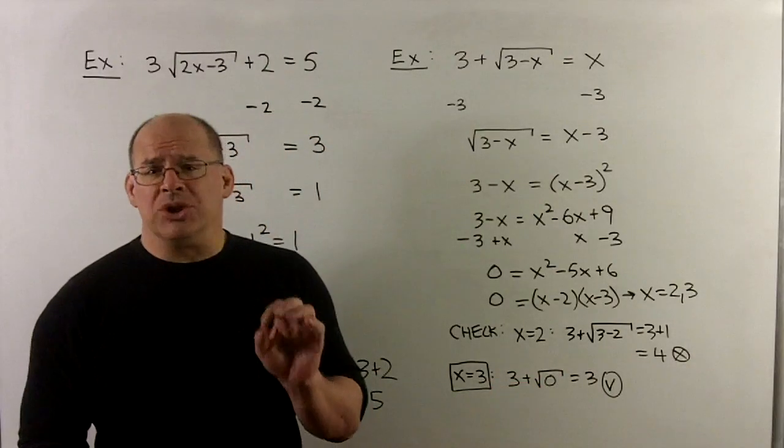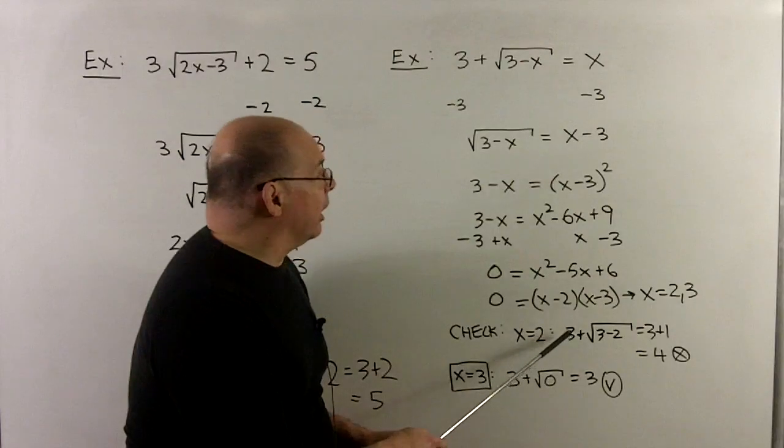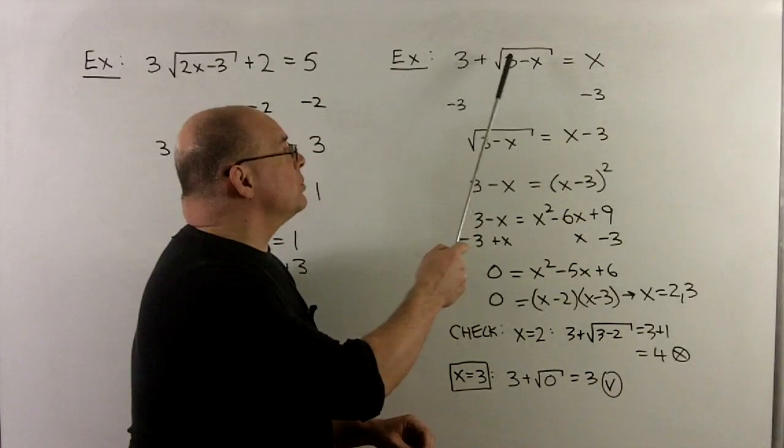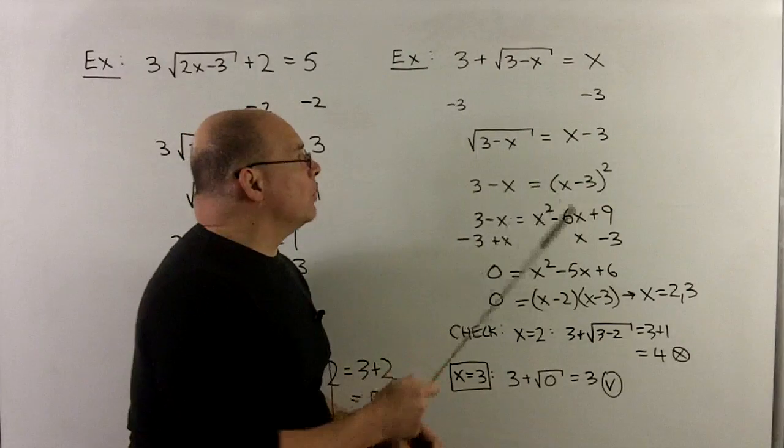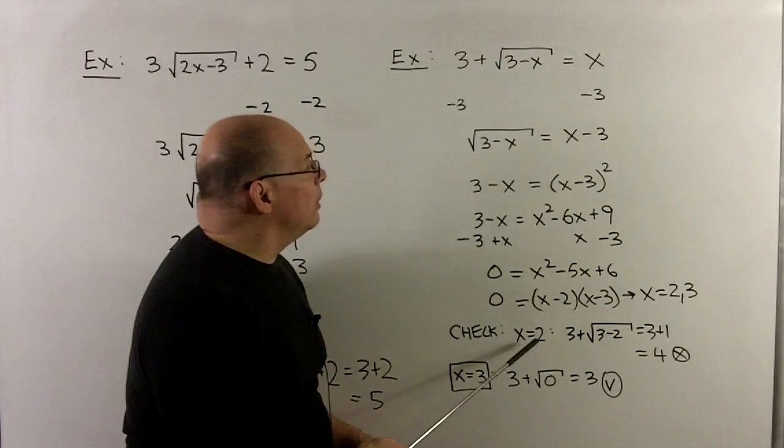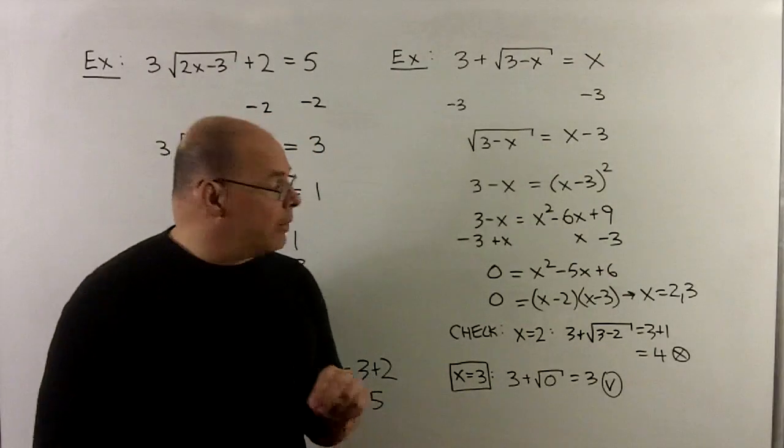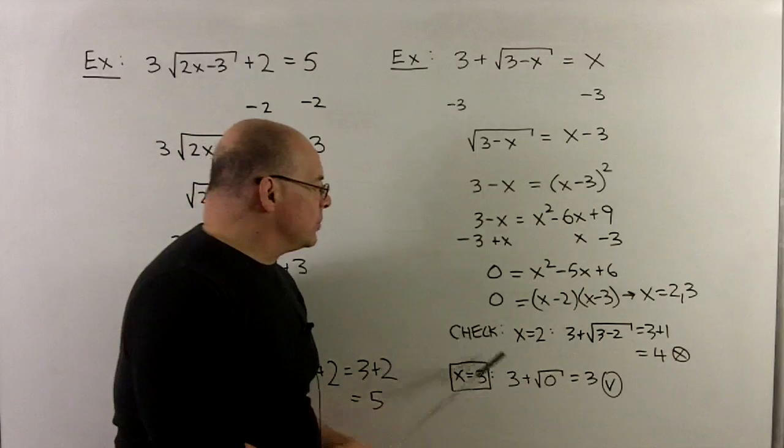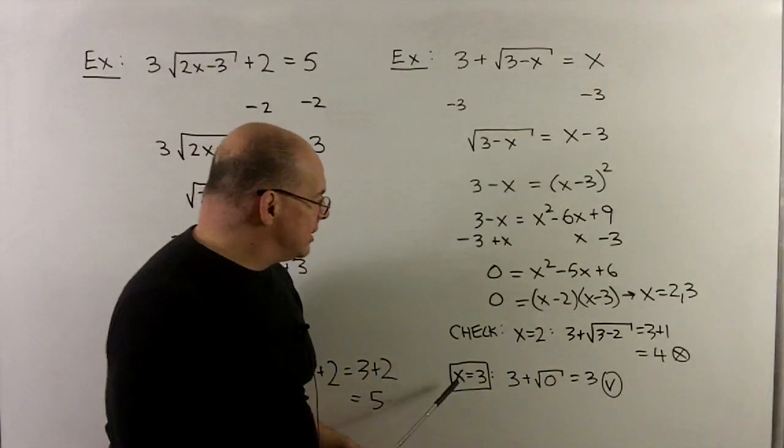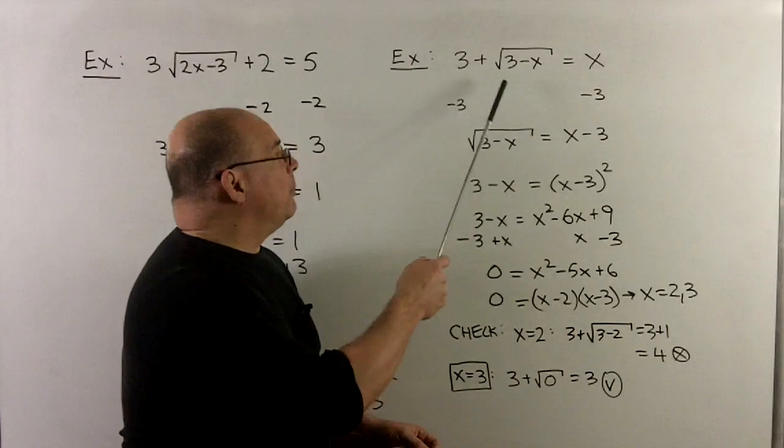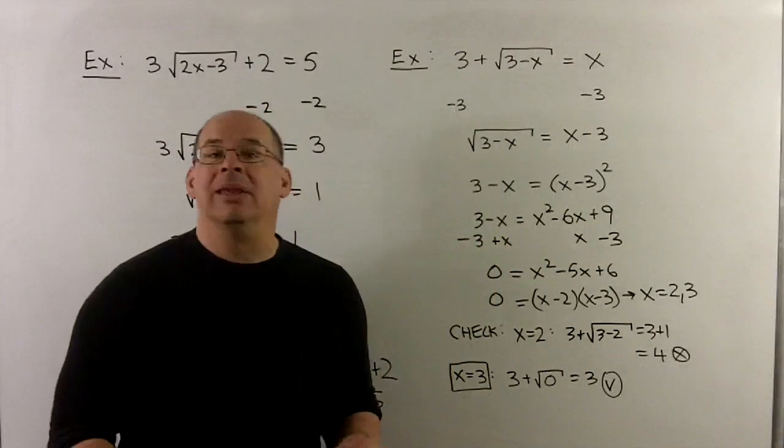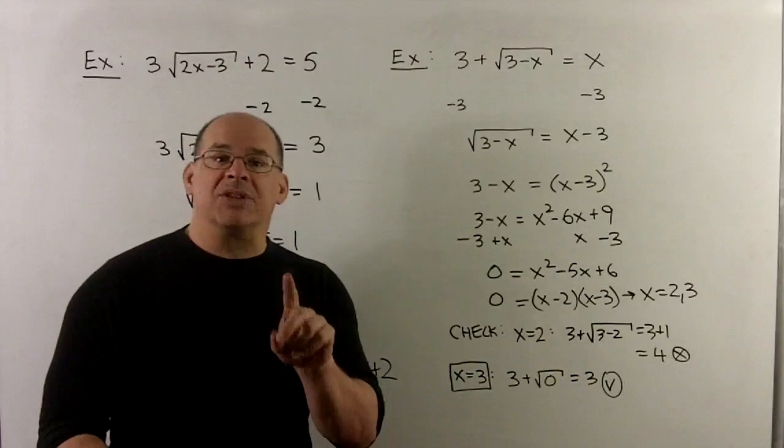Now, when I go to check my work, if I put a 2 in here, we're going to have 3 plus radical 3 minus 2. So, radical 1 is 1, so a 3 plus 1, which is a 4. But, that's supposed to be equal to a 2. So, this is not going to work. So, I'm going to have to throw away the x equals 2 solution. On the other hand, when we go check the x equal to 3, when we put that into here, 3 minus 3 is 0. So, I'm just going to wind up with 3 equal to 3. That's a true statement. So, that solution I want to keep.